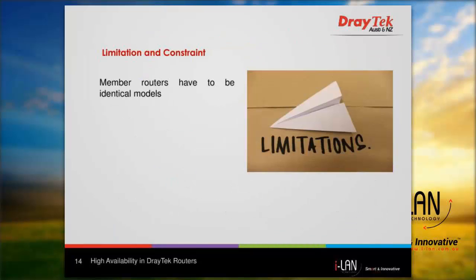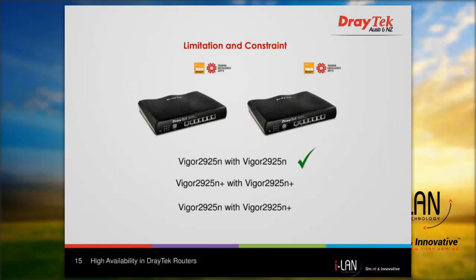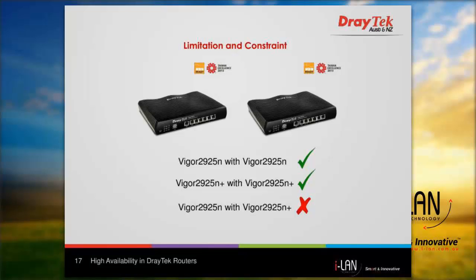The only constraint of using high availability mode is that all member routers need to be identical router models. For example, a Vigor 2925n will work with another Vigor 2925n, and a Vigor 2925n works with a Vigor 2925n Plus, but a Vigor 2925n cannot work with a Vigor 2929n Plus in high availability mode.